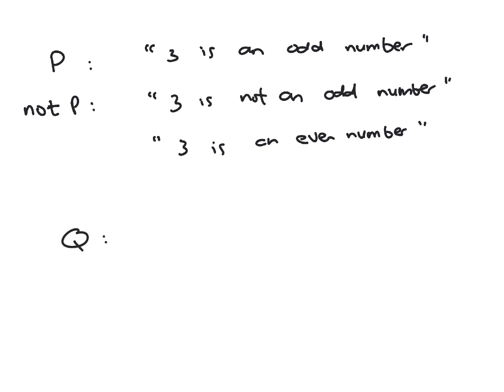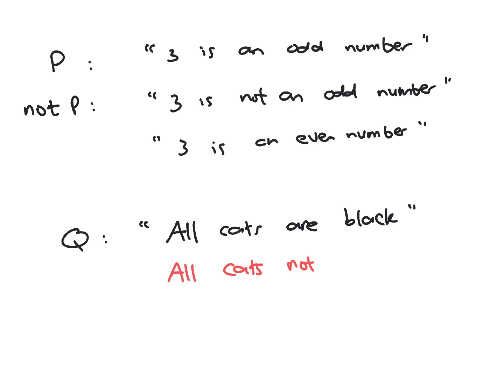Now let's take a look at statement q: 'All cats are black', which we know is a false statement. It is not true that the negation of this statement is 'All cats are not black' — this is not the correct negation. The meaning of 'all cats are not black' is not the same as 'not all cats are black'. When we negate the sentence 'all cats are black', we mean that there's at least one cat that is of a different color, let's say gray.